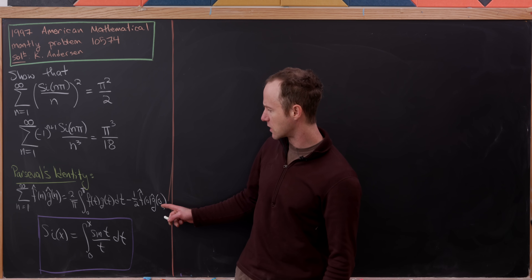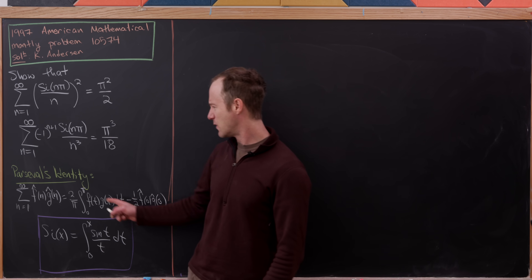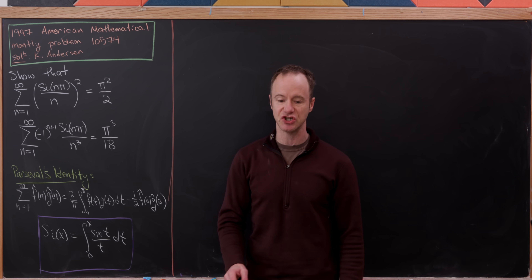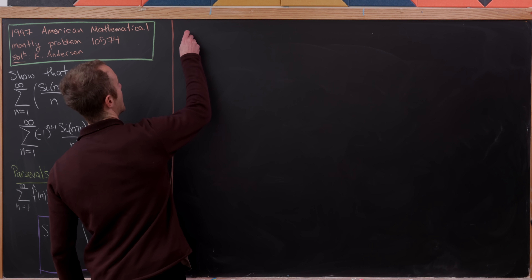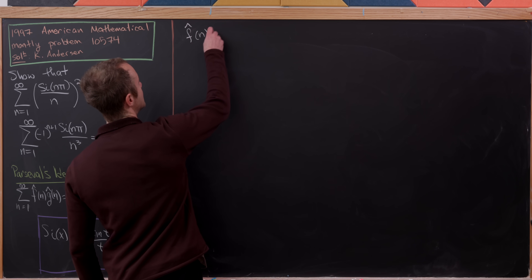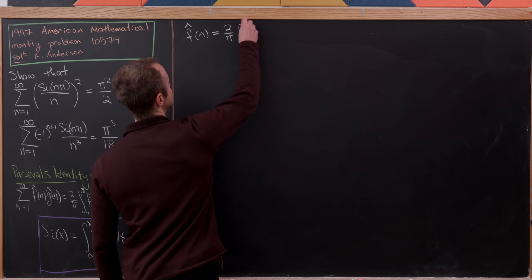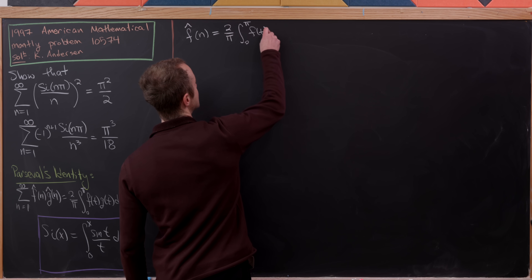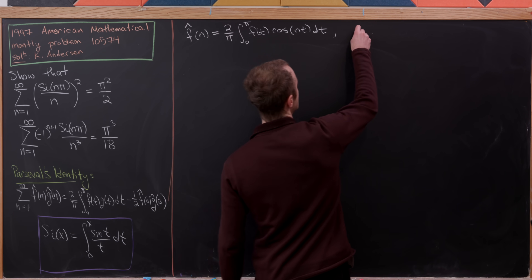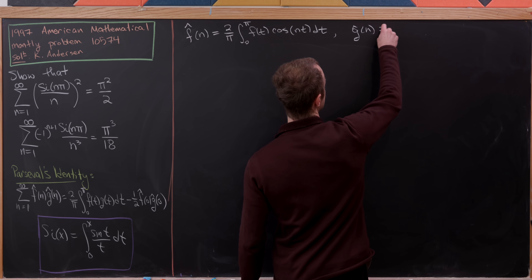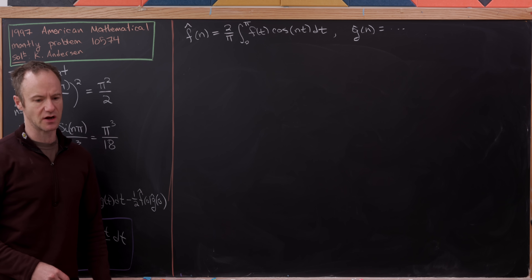Here we'll use Parseval's identity, which we proved in a previous video. So f̂(n) is equal to 2/π times the integral from 0 to π of f(t) times cosine(nt) dt. And similarly ĝ(n) is defined essentially the same way with g in place of f.